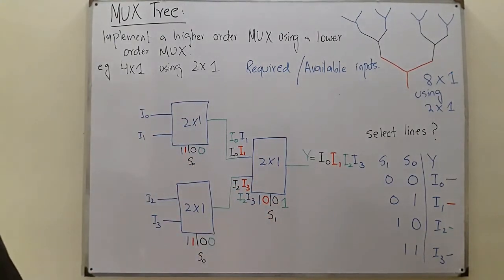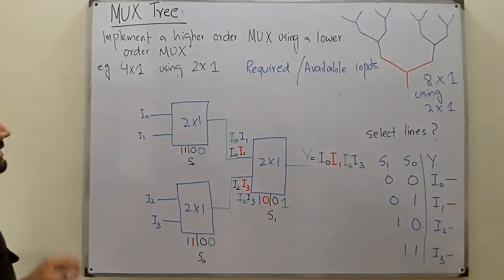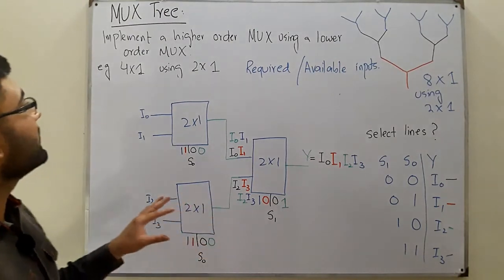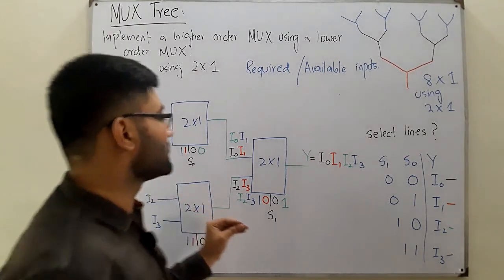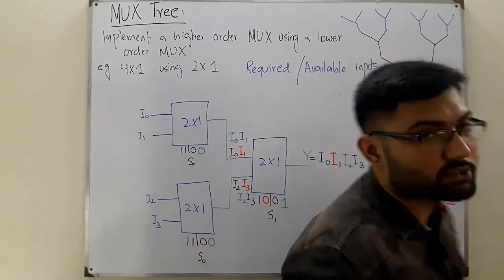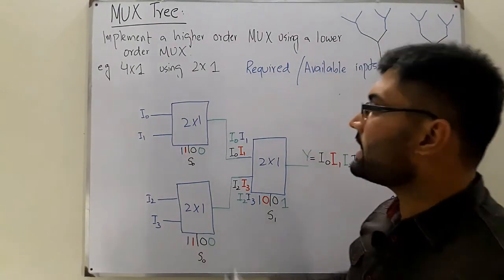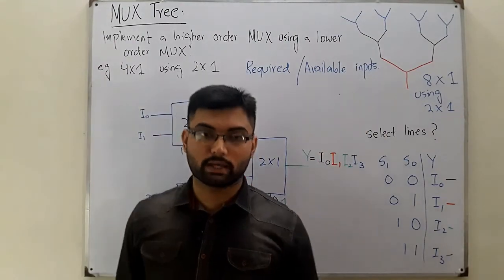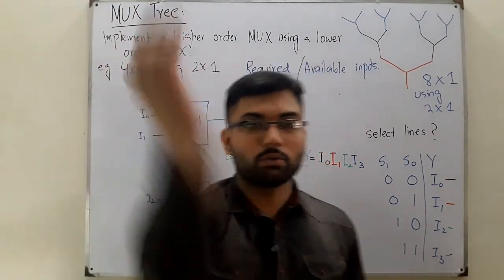That's the complete 4:1 multiplexer implemented using 2:1 multiplexers. In the next video we'll look at an 8:1 multiplexer using 2:1 MUXes. Till then, take care of yourselves and everyone around you. Goodbye.